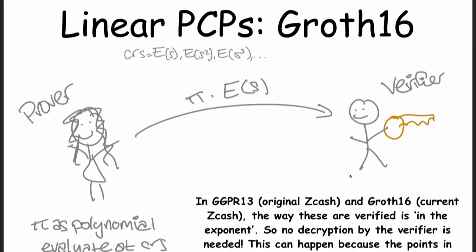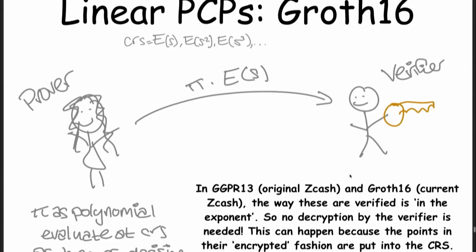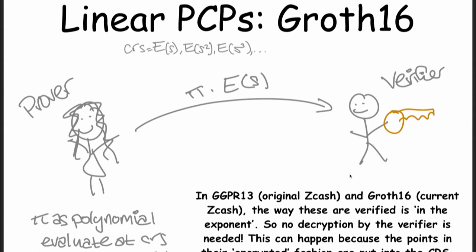This is how Groth16 works. And Groth16's proof is actually just three group elements, which is extremely tiny — this is what Zcash uses currently, it's the state of the art. One proof element is a representation of all of the upper gates from the arithmetic circuit. The other proof element represents all of the lower gates. The third proof element represents consistency of the entire circuit — using these two other proof elements, you can make sure that every output of a gate equals the multiplication of the two inputs with just three group elements.